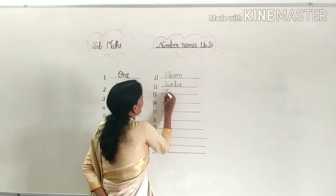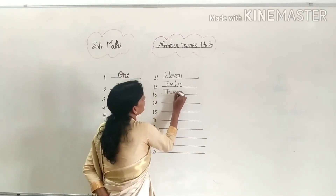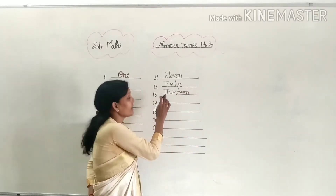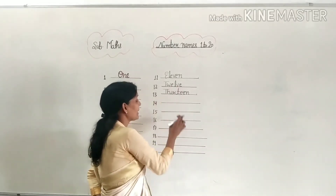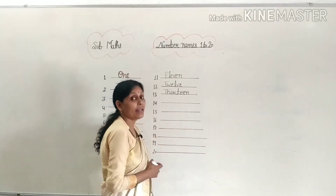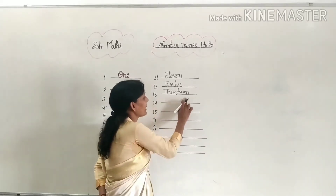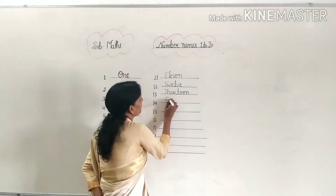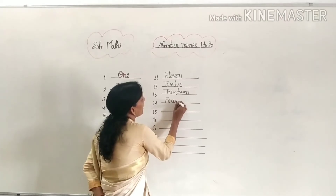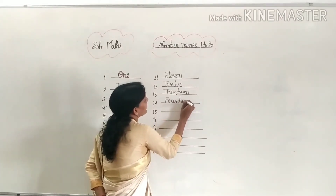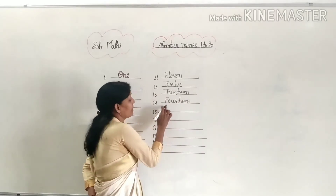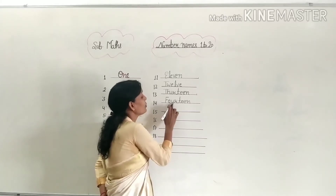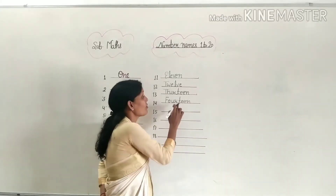And 13: T-H-I-R-T-E-E-N. Thirteen. And next, 14: F-O-U-R-T-E-E-N. Fourteen. What is the spelling of fourteen? F-O-U-R-T-E-E-N, fourteen.